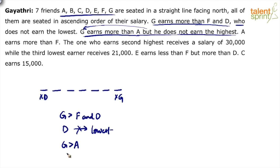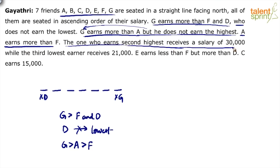A earns more than F, so A is greater than F. Then the one who earns the second highest receives a salary of 30,000. The one who earns the second highest receives 30,000. While the third lowest earner receives 21,000.